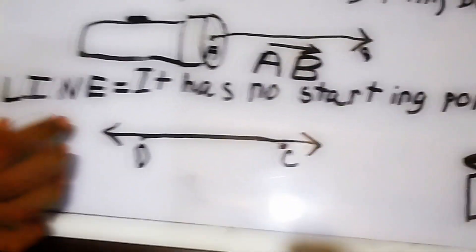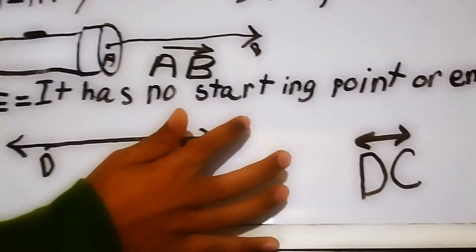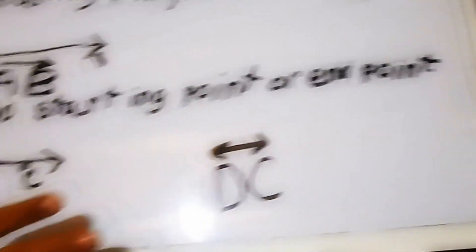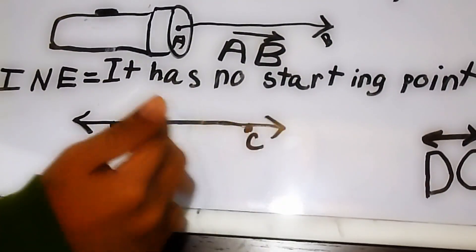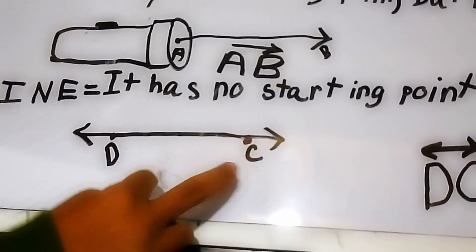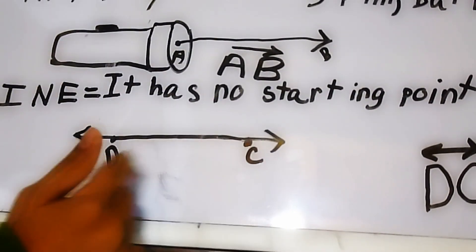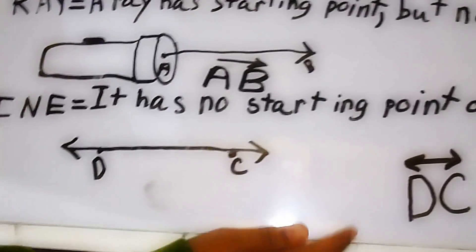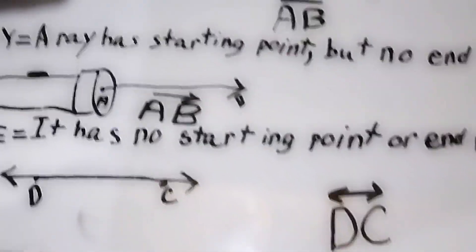On to the line, the last one. A line has no starting point or end point. That means it keeps going on both sides forever. These are my two initials, D and C, and these are the two points. Thanks for watching.